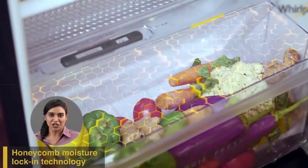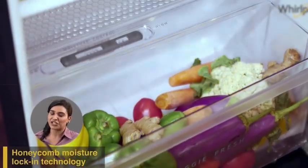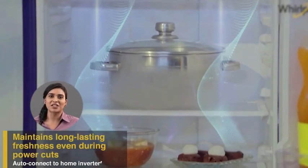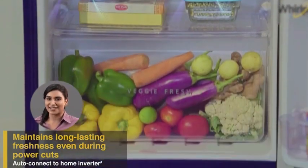The honeycomb pattern in the crisper maintains optimum moisture levels, creating a microclimate for fresher vegetables. With the Auto-Connect to Home Inverter feature, the refrigerator ensures consistent cooling and long-lasting freshness, even during power cuts. Simply connect it to a higher than 2.5kW inverter and you're all set.